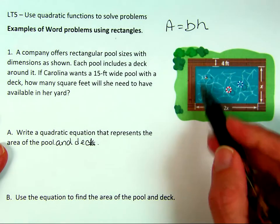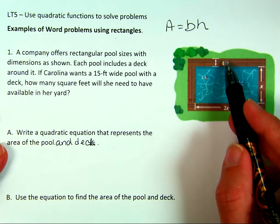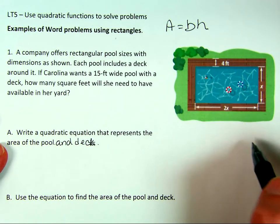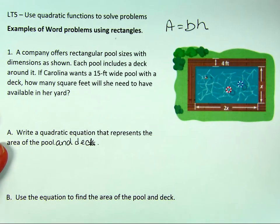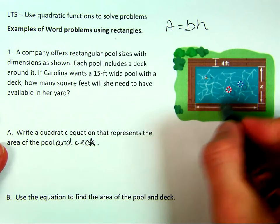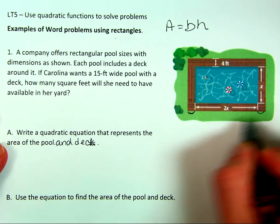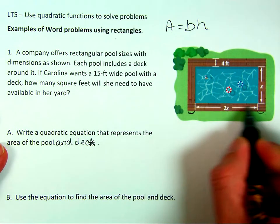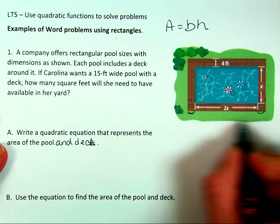But how much will she need, because we've got this 4-foot deck all around it. So what we do is we're going to say, what is this extra distance right here? Because we have to find the new, we know the pool is 2x long, but we have to find this whole length.